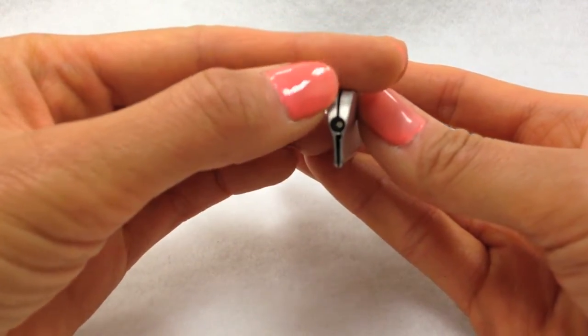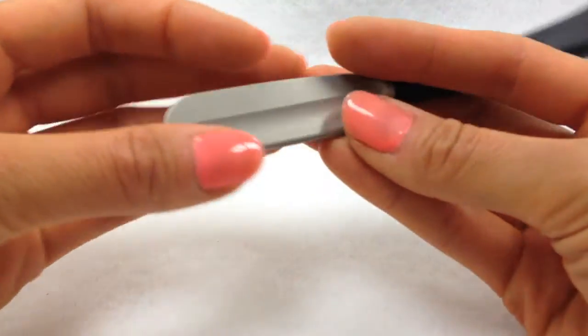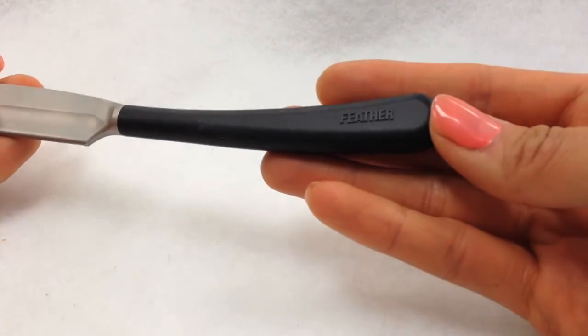The small hole at the tip of the razor is for safe and easy insertion of any of the four Artist Club blades.